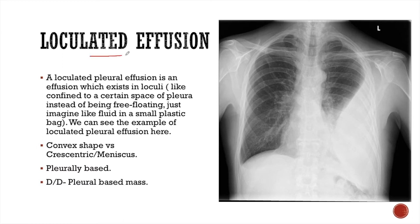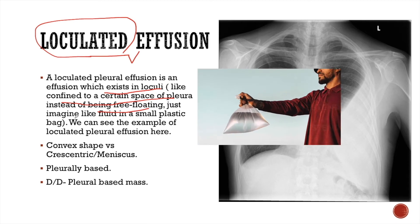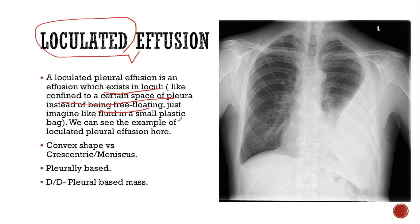When pleural effusion does not lie in the dependent area forming a meniscus, it is known as loculated pleural effusion. A loculated pleural effusion exists in loculi — confined to a certain space of the pleura — instead of being free-floating, like fluid in a small plastic bag. In this example, the pleural fluid lies in the left lateral aspect of the thorax and has a convex shape instead of a meniscus. This convex shape is the hallmark of loculated pleural effusion.